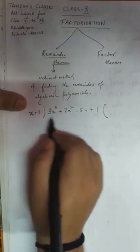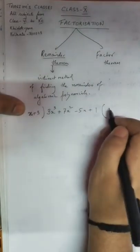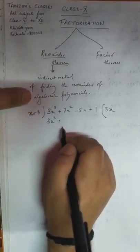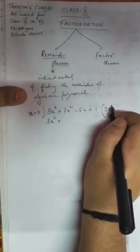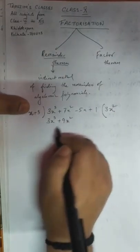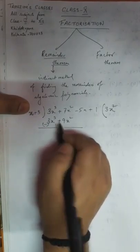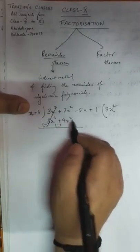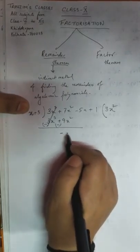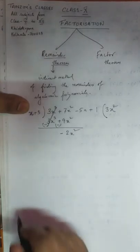In class 6 or 7 we already learned about this division. We divide this polynomial by x + 3. If we multiply x by 3x² we get 3x³, and plus 3 into 3x² gives 9x². Next we subtract by changing the sign, so the first term gets cancelled. Then 7x² minus 9x² gives minus 2x².